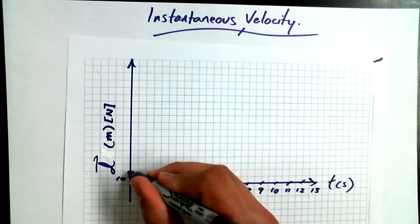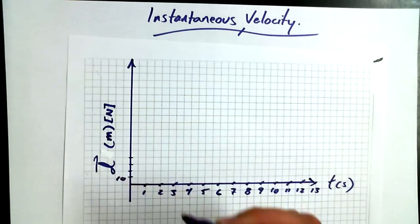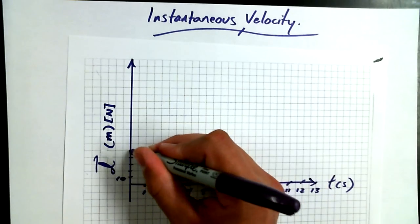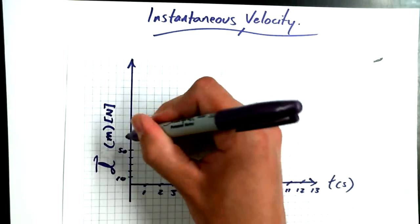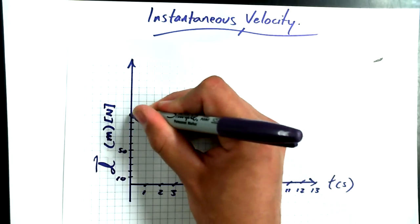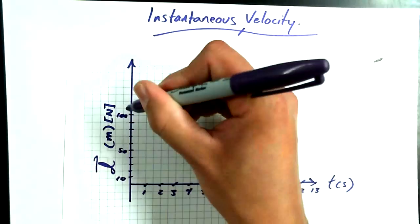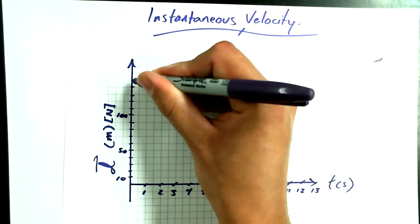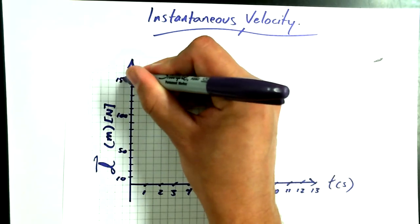Each increment going up vertically is going to be 10 for me — so 10, 20, 30, 40, 50, 60, 70, 80, 90, 100, then continuing up to 150.